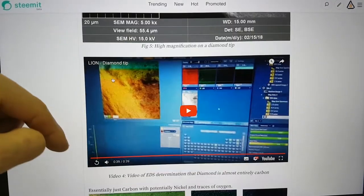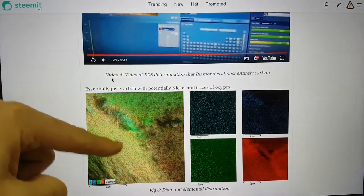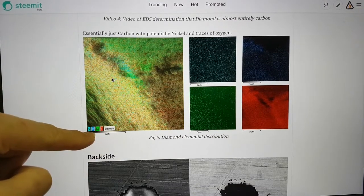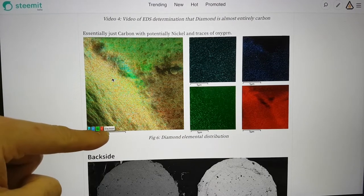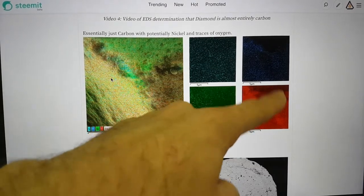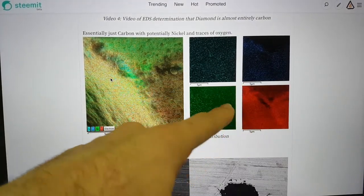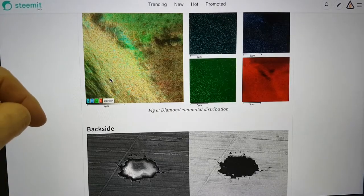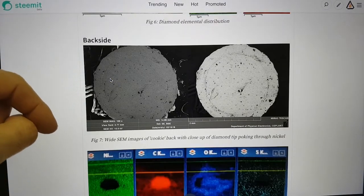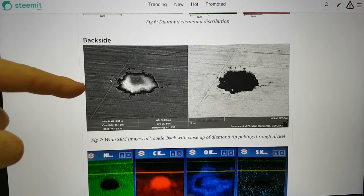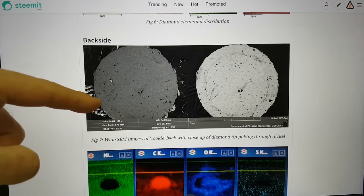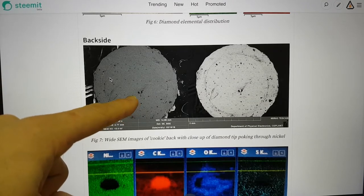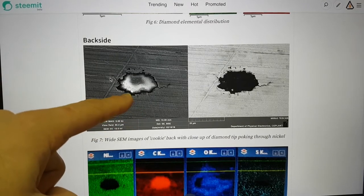When we look at that there's a video of the actual analysis and you can see that it's again essentially carbon here and it's probably seeing some oxygen on the surface maybe and some nickel refracting through potentially.